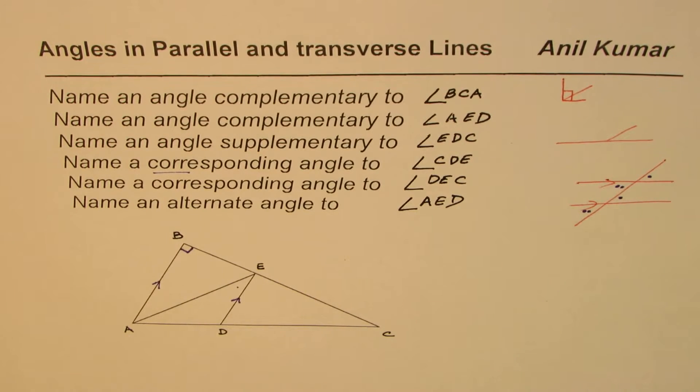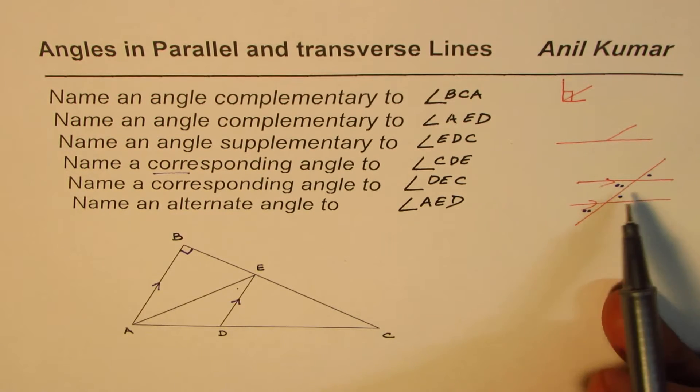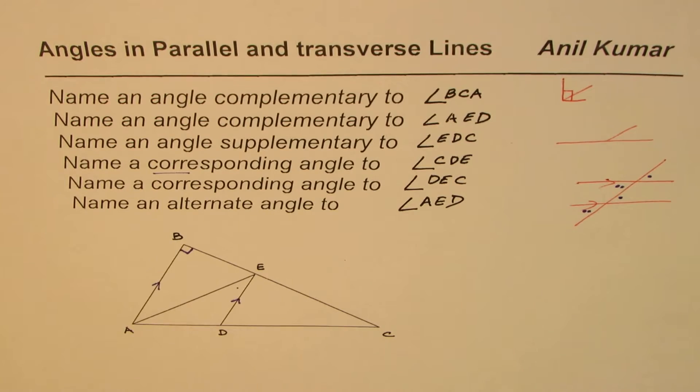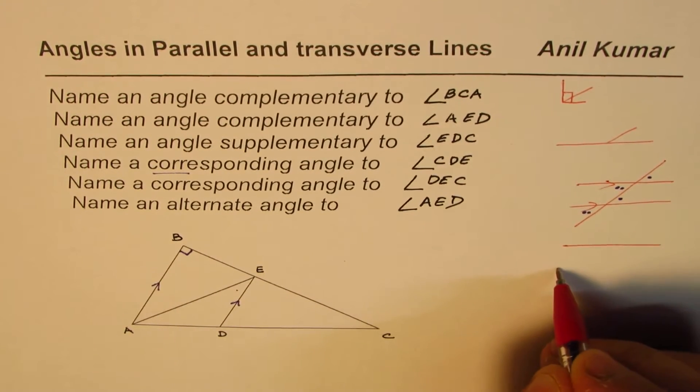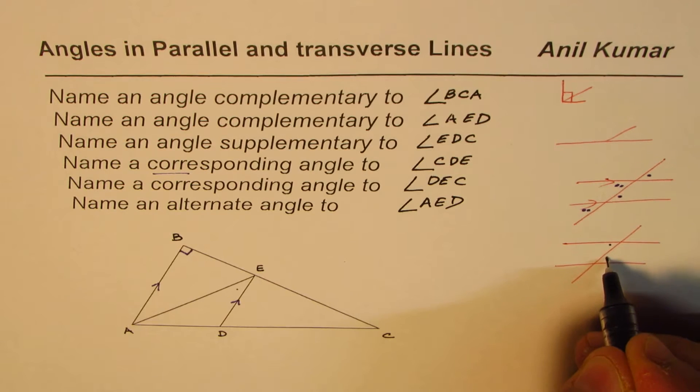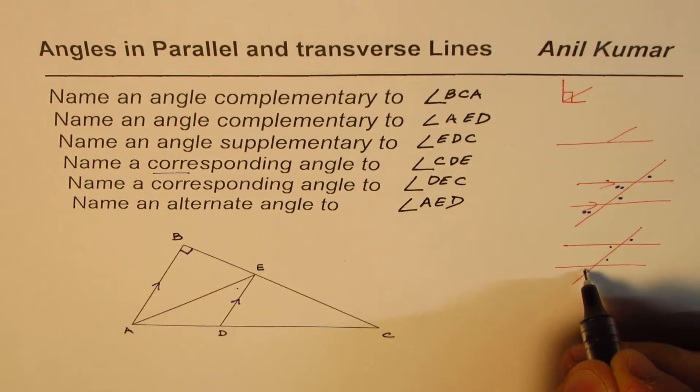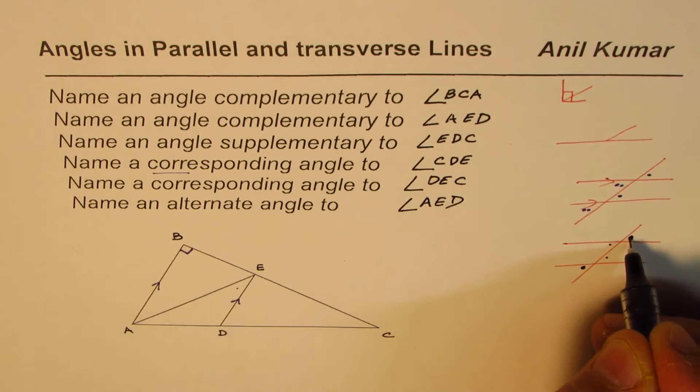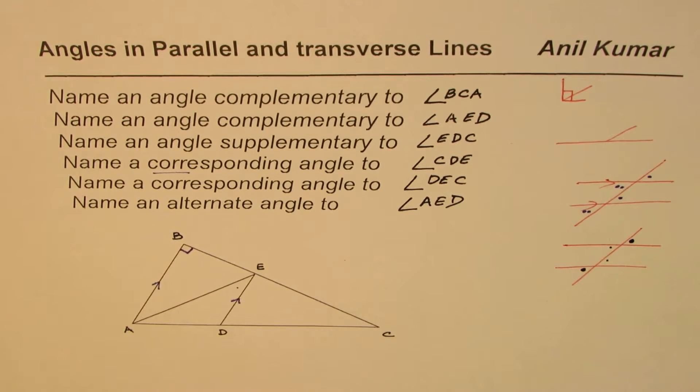How about the alternate angles? Now alternate angles will be the ones which are kind of like this. So either this and this, this is the interior alternate, or we could do this and this right, so exterior alternate. These are alternate angles.